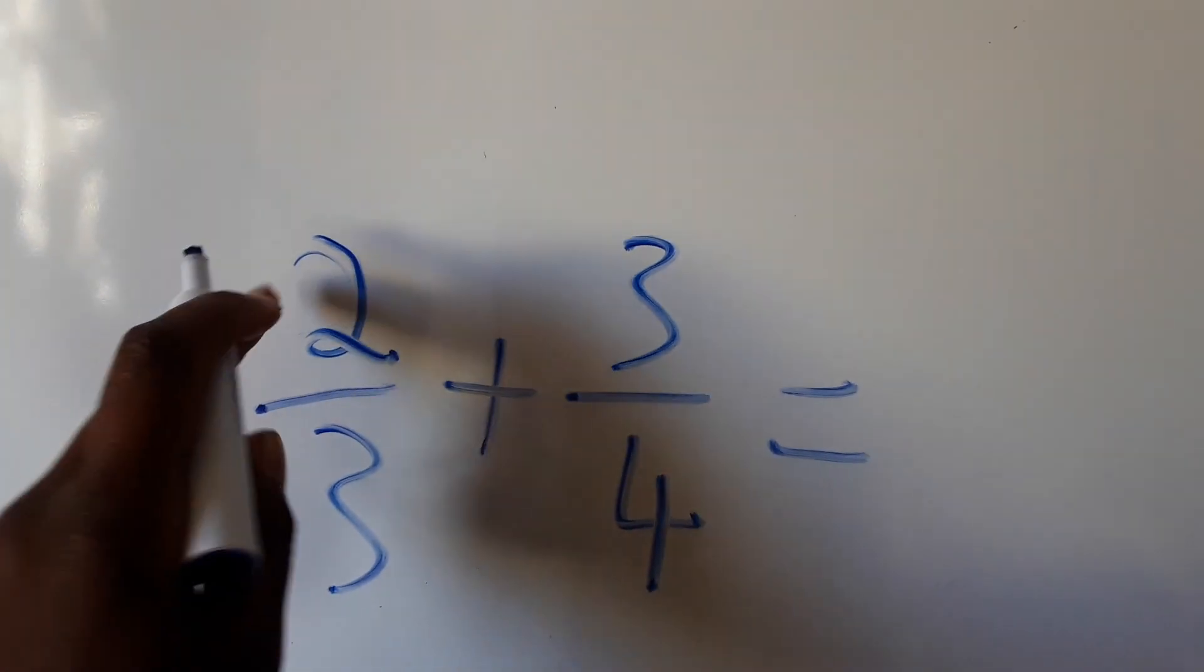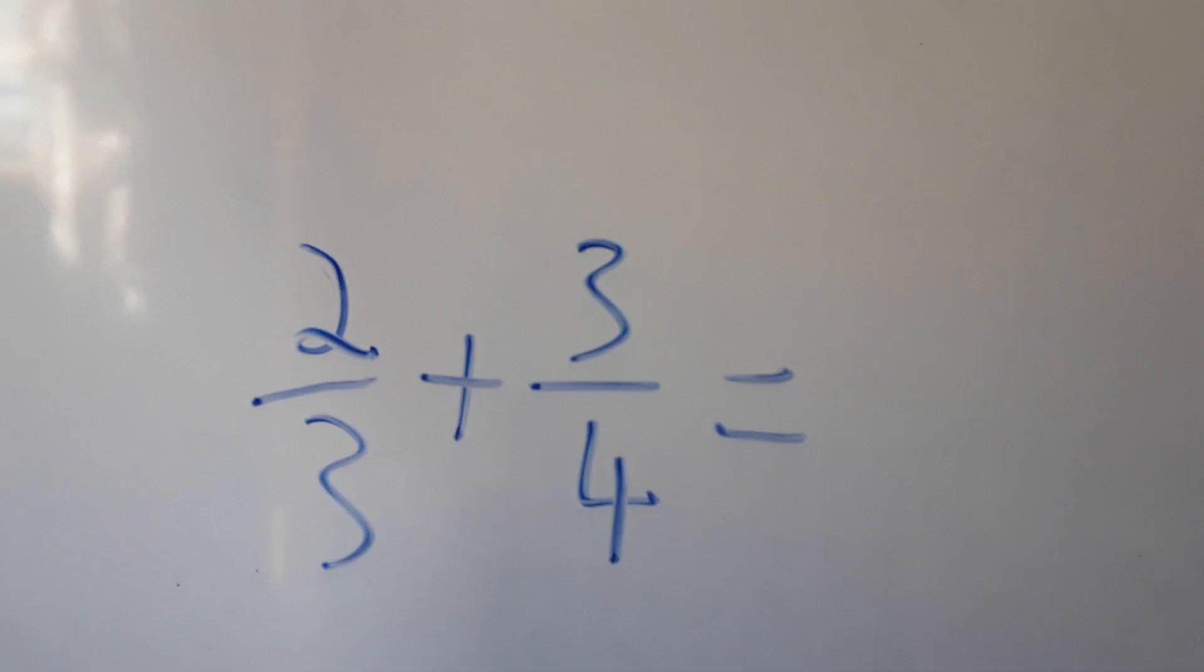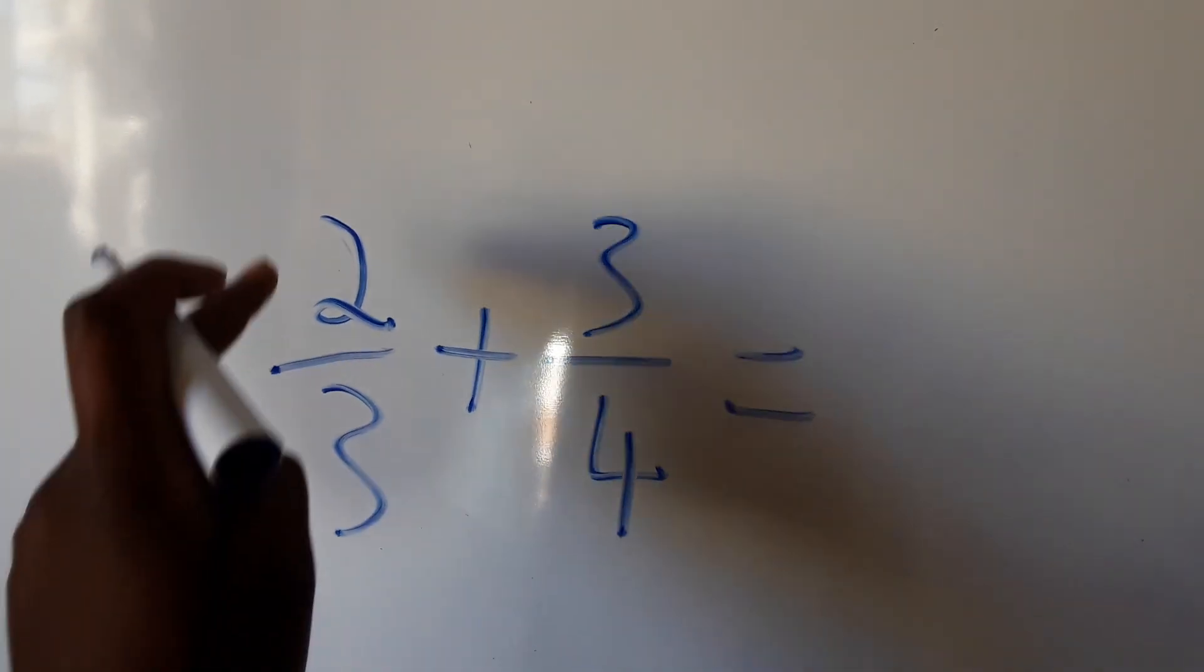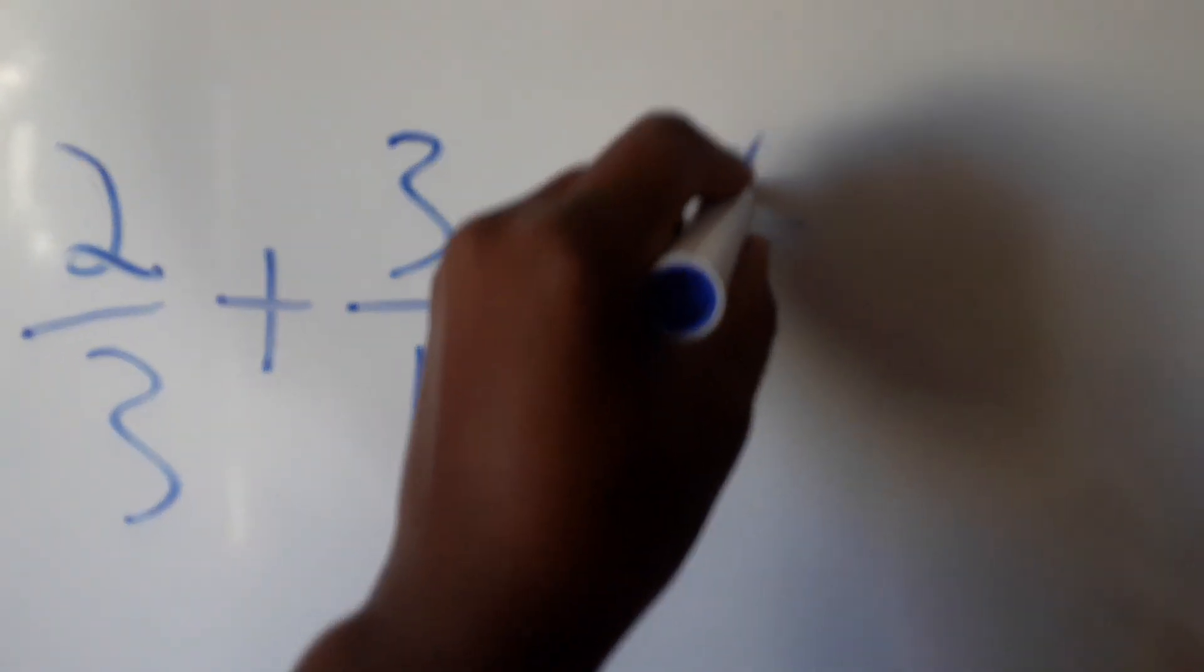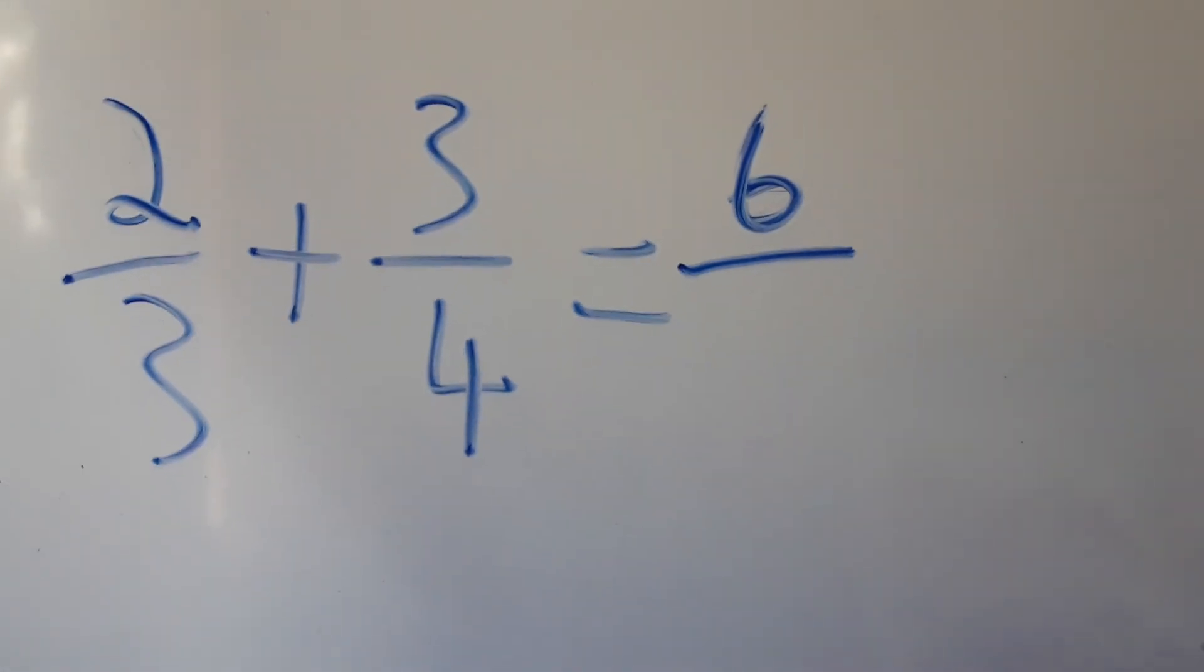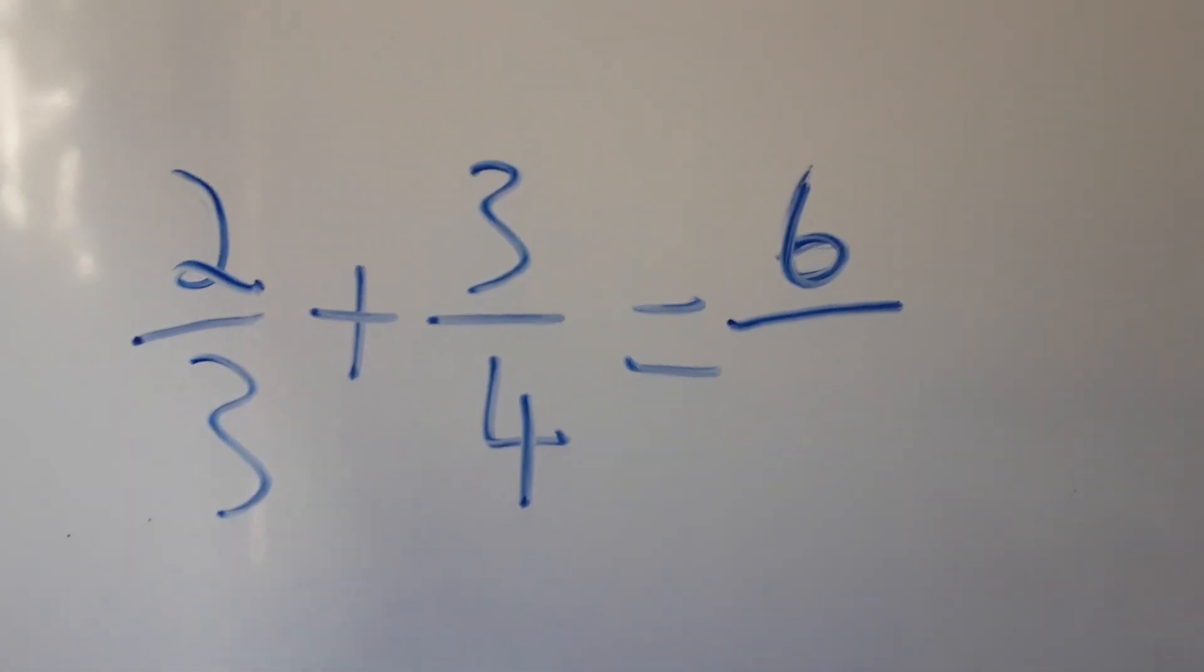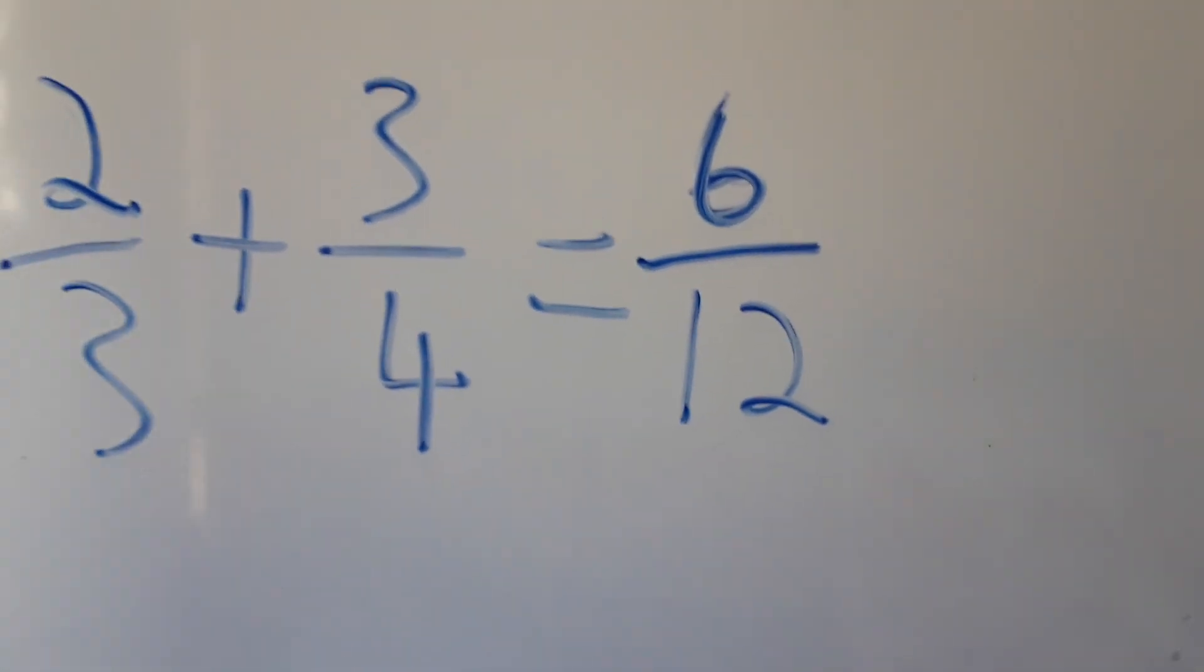So we have 2 over 3 times 3 over 4. We say 2 times 3, and we get 6. 6 is our top number, over 3 times 4, which is 12. So this is how easy it is to multiply fractions.